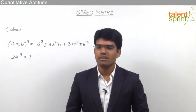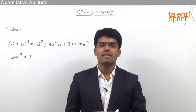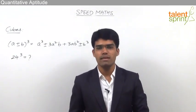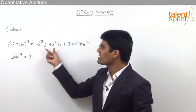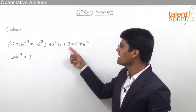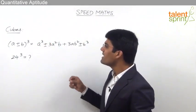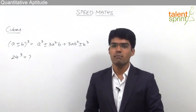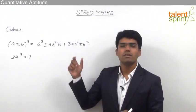Assuming you all know cubes from 1 to 15 by heart, let us now see how to find out cubes of numbers beyond 15. In case of squares, we creatively used the formula (a ± b)² = a² ± 2ab + b². For cubes, the expansion (a ± b)³ = a³ ± 3a²b + 3ab² ± b³ has four terms to simplify, making it complicated. So we will avoid using this formula for cubes.